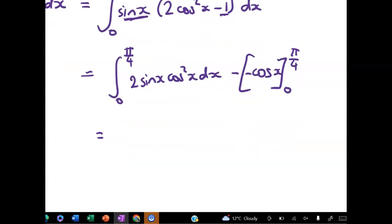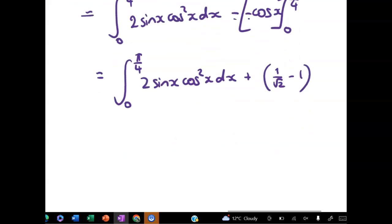So let's just figure out what that is. I'll write this out again, and then we'll do the u substitution. 2 sin x cos squared x dx plus, right? So it's a plus because of those two. Cos of pi on 4 is 1 on root 2 minus cos of 0, which is 1.